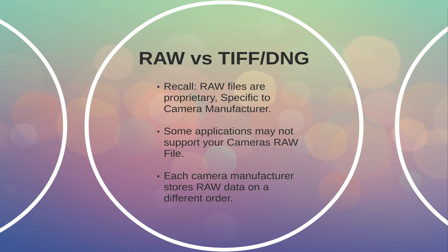When we discussed the RAW image format, we mentioned that each RAW file is proprietary to the camera and manufacturer that produced it. This means that certain applications may not be compatible with the RAW file produced by a certain camera. You'll often experience this if you purchase new equipment but use old editing software, such as older versions of Photoshop or Lightroom. In some cases, even newer applications may not be able to read your file.